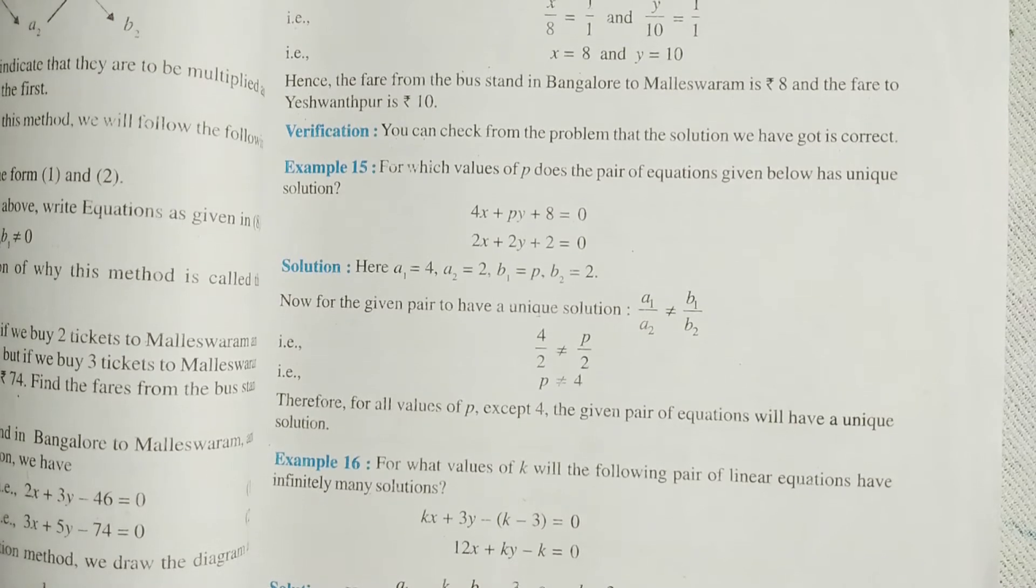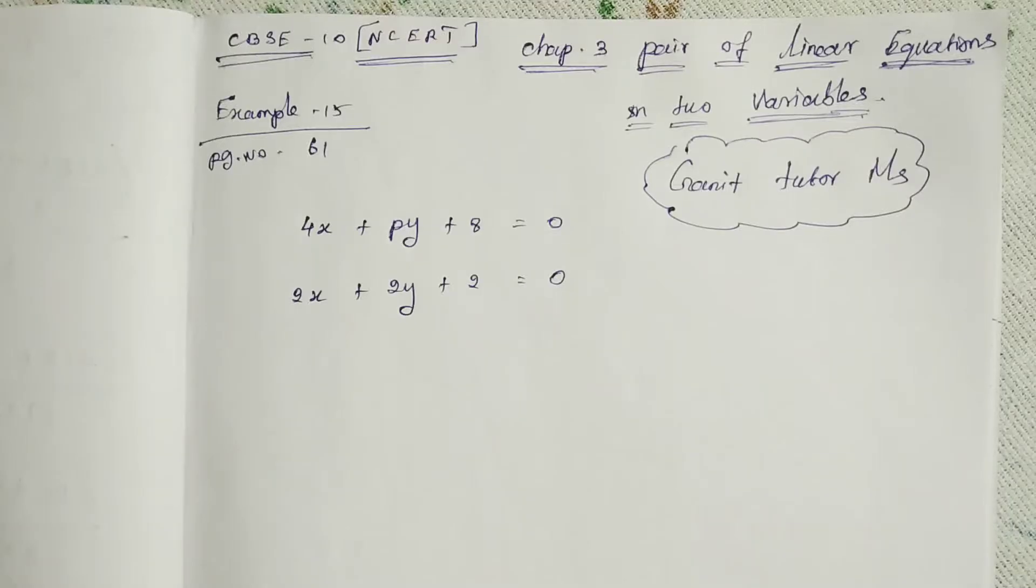Are you clear? So we can put some value for p, then the pair of linear equations became unique solutions. So now we find out what value of p makes the solution a unique solution. Clear? It is very easiest one.